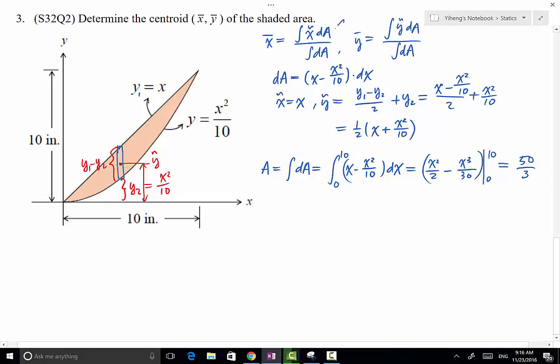So moving on to the first numerator, which is x-tudor dA, which equals simply x times dA, and dA again is x minus x squared over 10 dx, integrated from 0 to 10. This is not too bad to integrate. Right here it's a polynomial x squared minus x cubed over 10. So this becomes x cubed over 3 minus x to the fourth over 40, from 0 to 10. After evaluation, this equals 250 over 3.